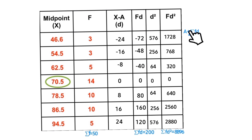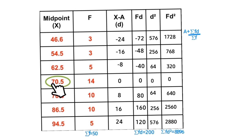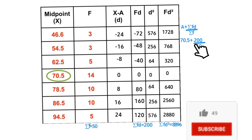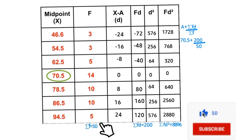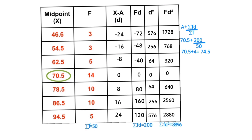This is the formula to calculate the mean using the assumed mean method: mean = a + (Σfd / Σf). Substituting our values: a = 70.5, Σfd = 200, Σf = 50. So we have 70.5 + (200 / 50) = 70.5 + 4 = 74.5. The mean mass of the students using the assumed mean method is 74.5.